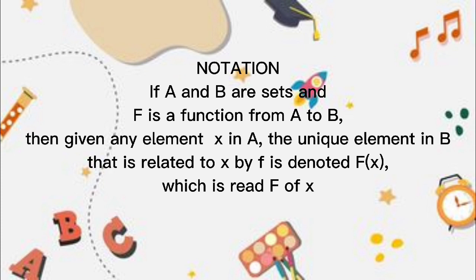Notation: if A and B are sets and F is a function from A to B, then given any element X in A, the unique element in B that is related to X by F is denoted F(x), which is read as F of X.